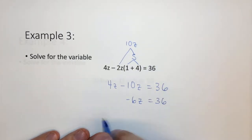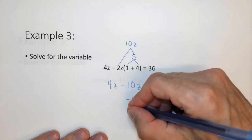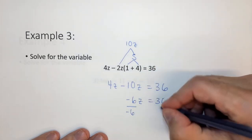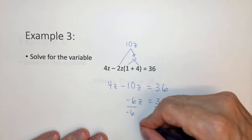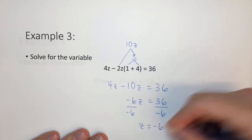Well 4z minus 10z is negative 6z equals 36. Now for the first time we need to do the same thing on both sides of the equation. Divide by minus 6, and z equals negative 6.